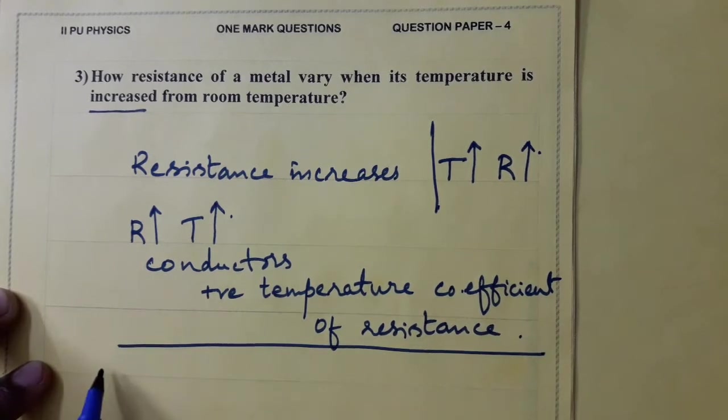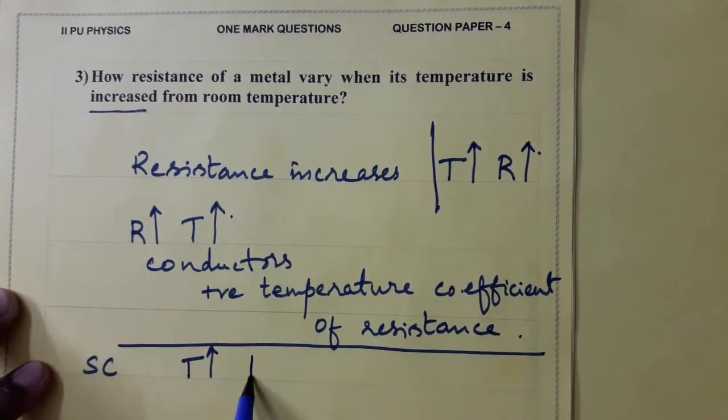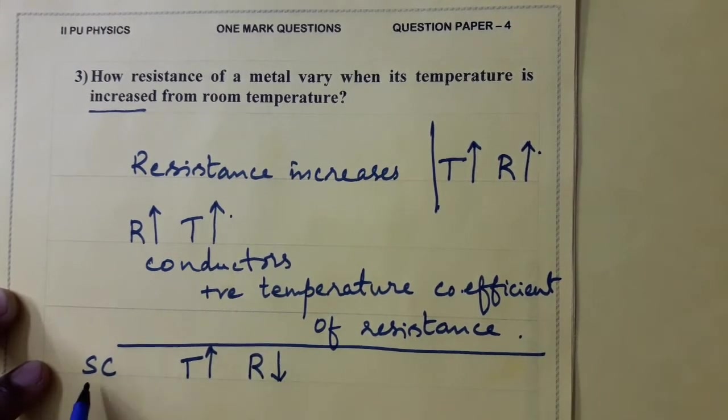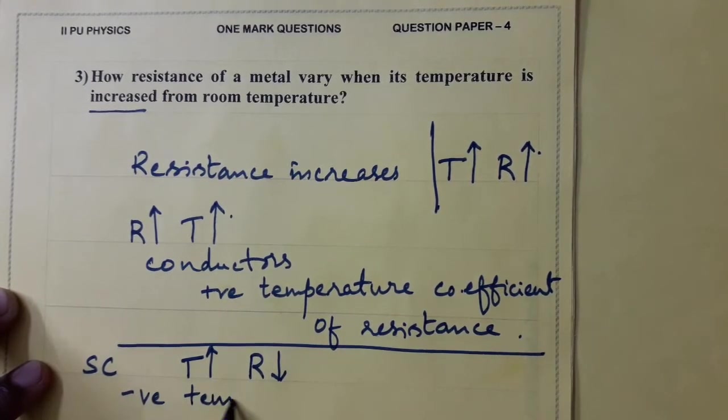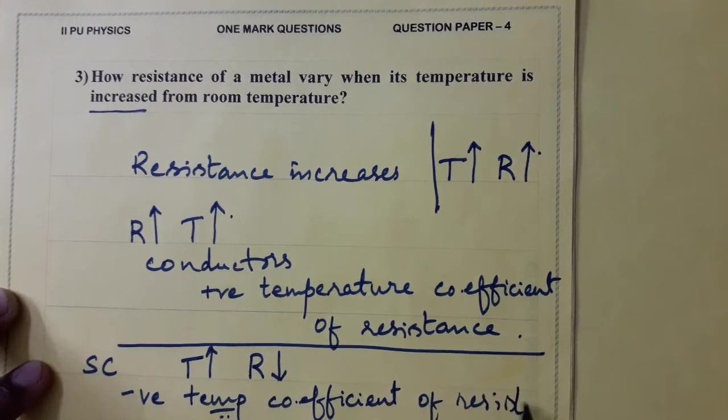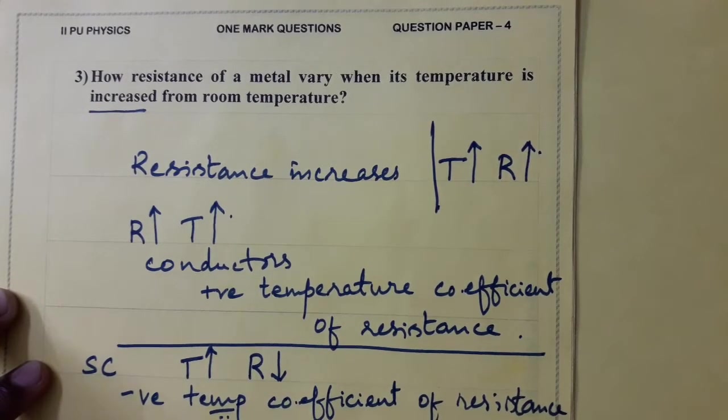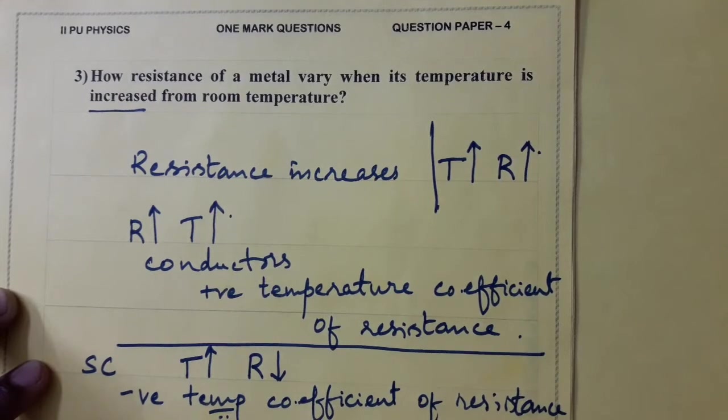Similarly, in the case of semiconductors, with the increase in temperature, resistance decreases. For this reason, semiconductors are said to have negative temperature coefficient of resistance. This is the answer for this question.